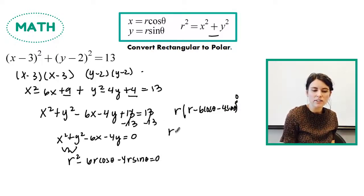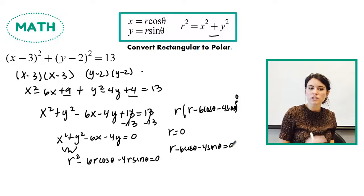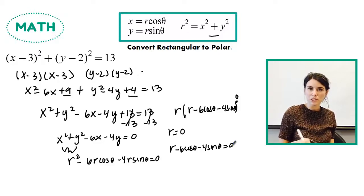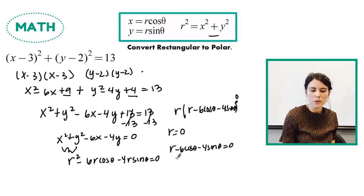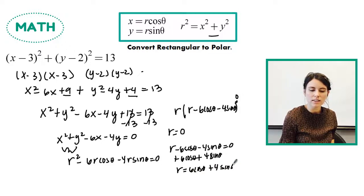And so now I have two equations. I have r equals 0, and then I have r minus 6 cosine theta minus 4 sine theta equals 0. So again, we want to get our equations in r equals form when we're doing polar coordinates. So I'm going to add 6 cosine theta and 4 sine theta to the other side of this equation. So I get r equals 6 cosine theta plus 4 sine theta.